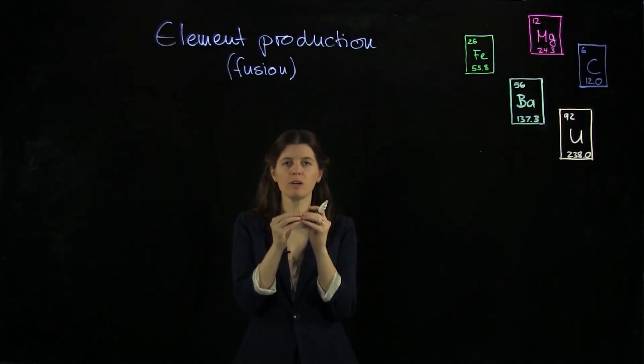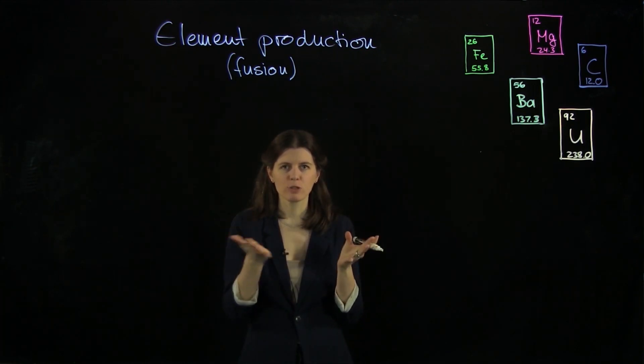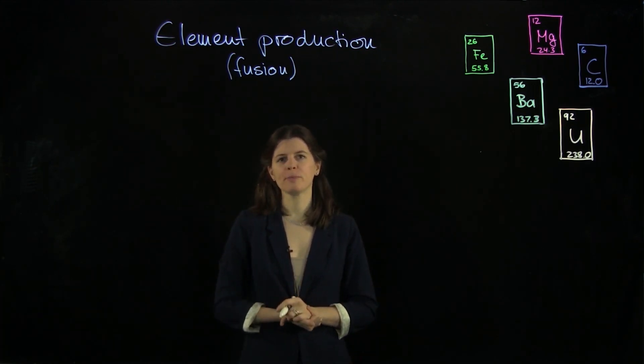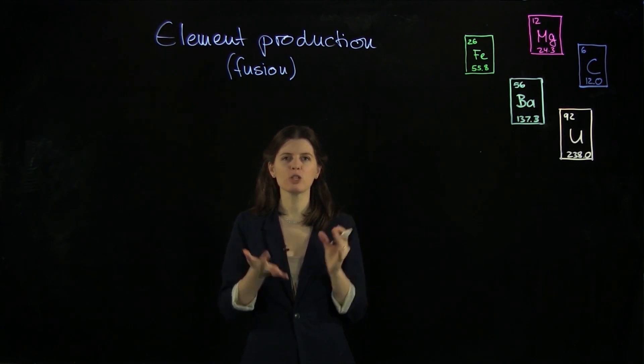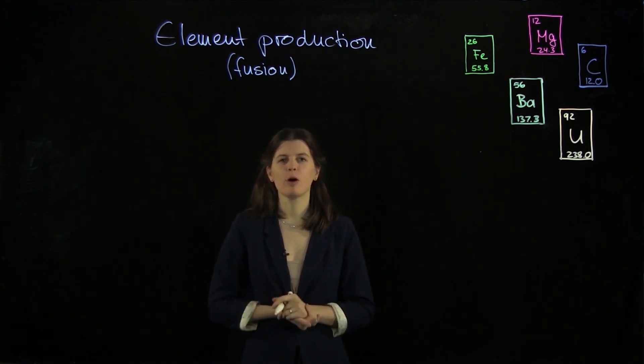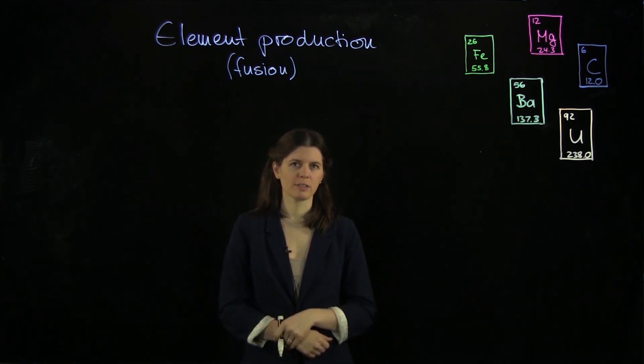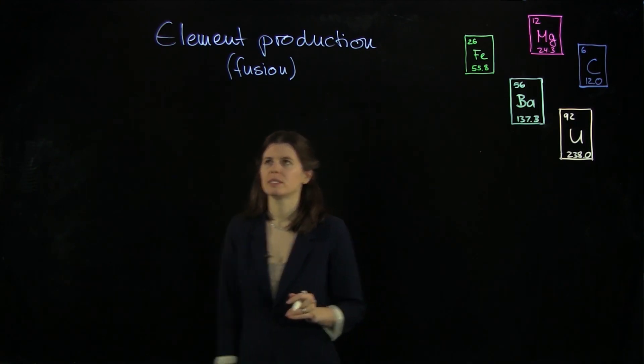Nuclear fusion is going on in the core of the sun. Hydrogen to helium gets converted there and that gives the sun enough energy to sustain its luminosity for billions of years. How does this work? Let's have a look.